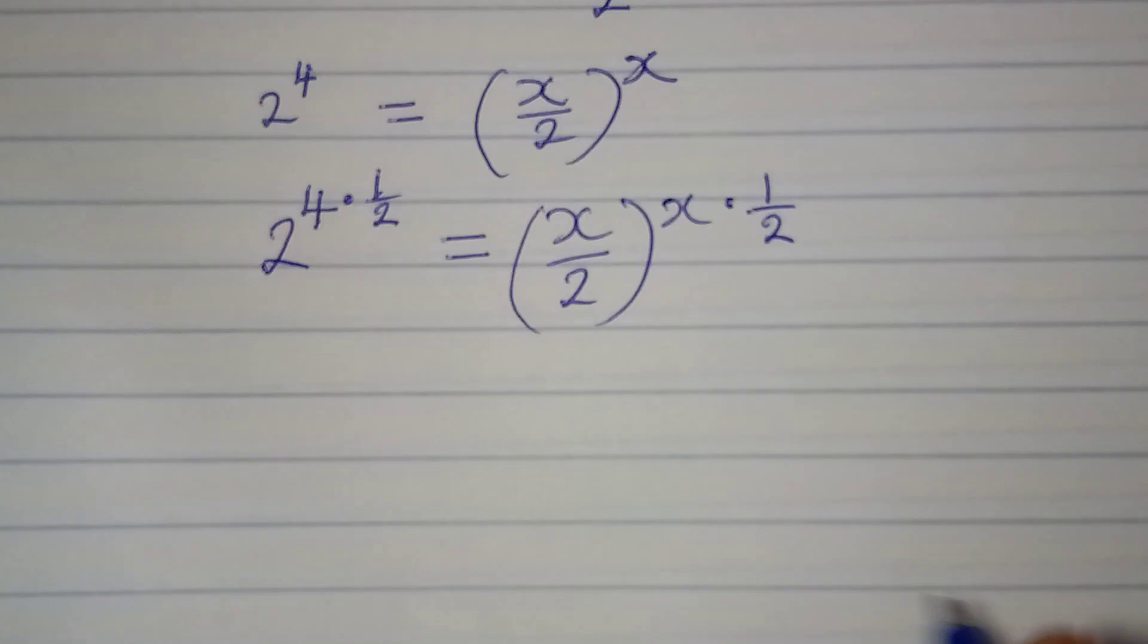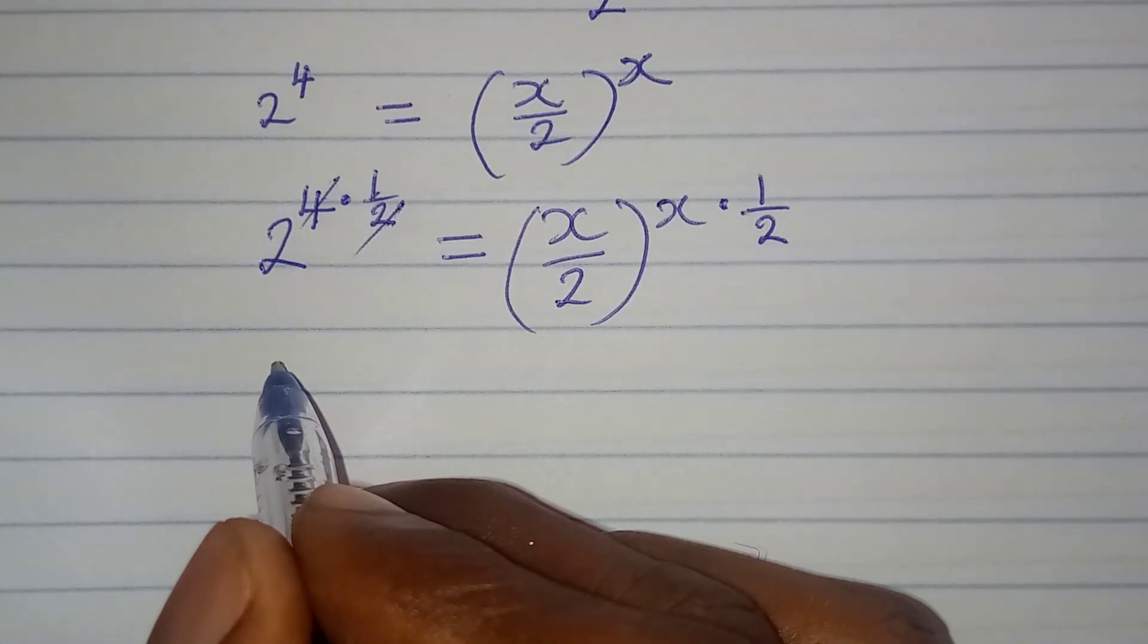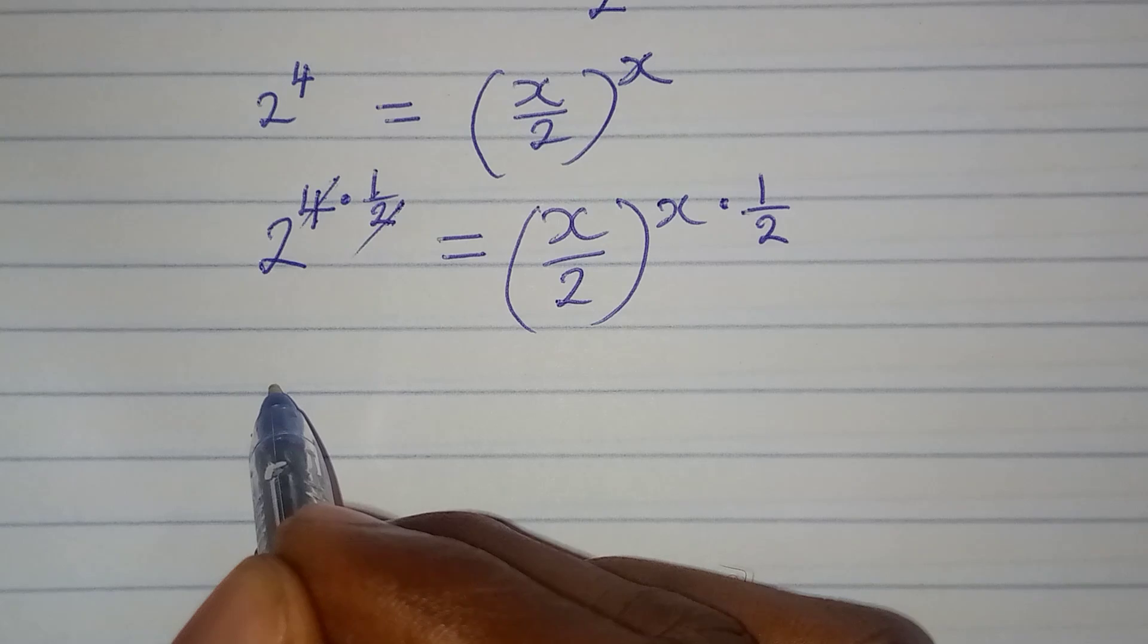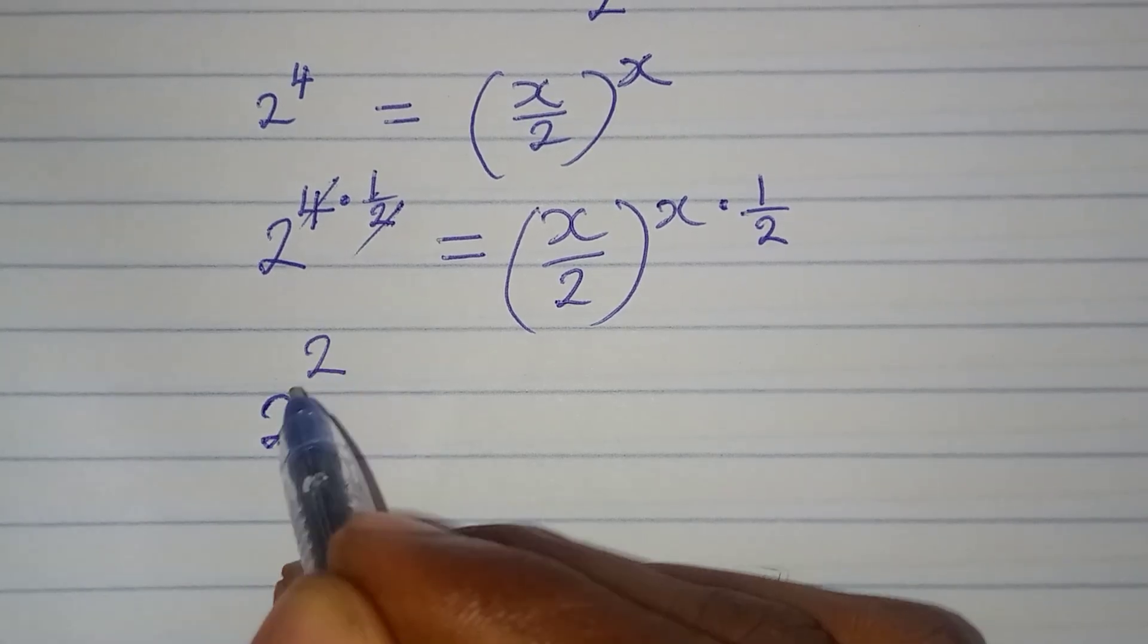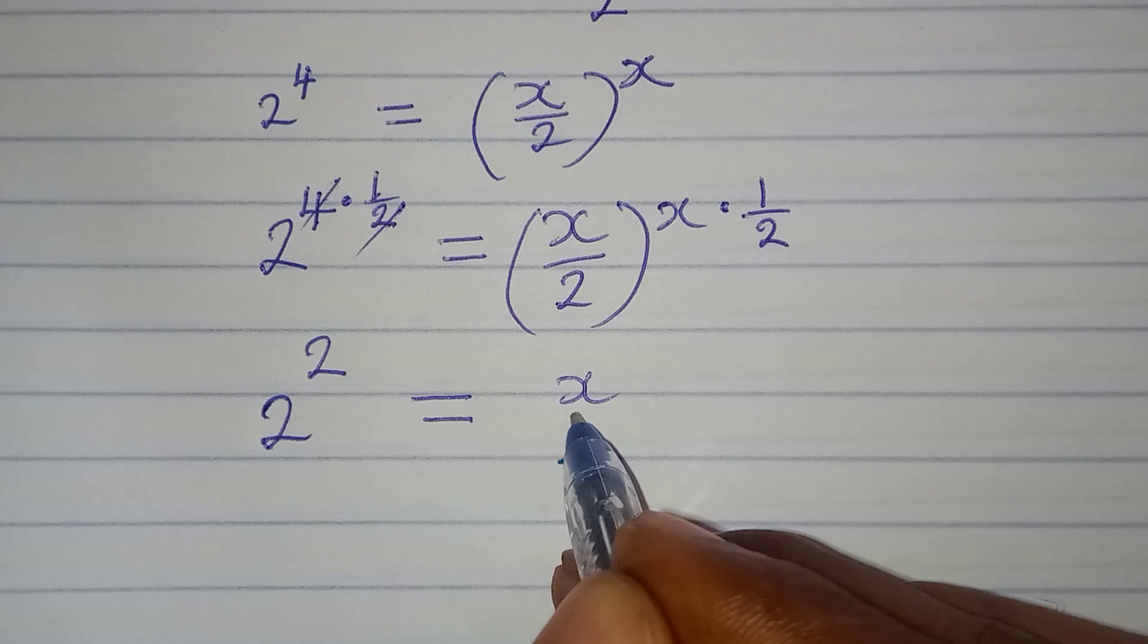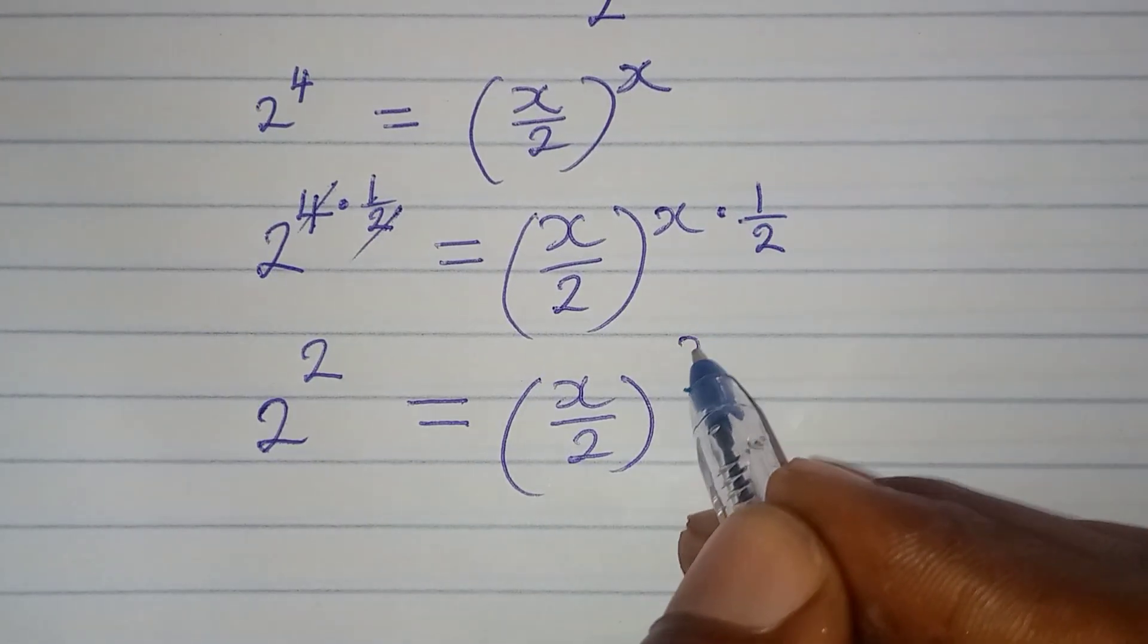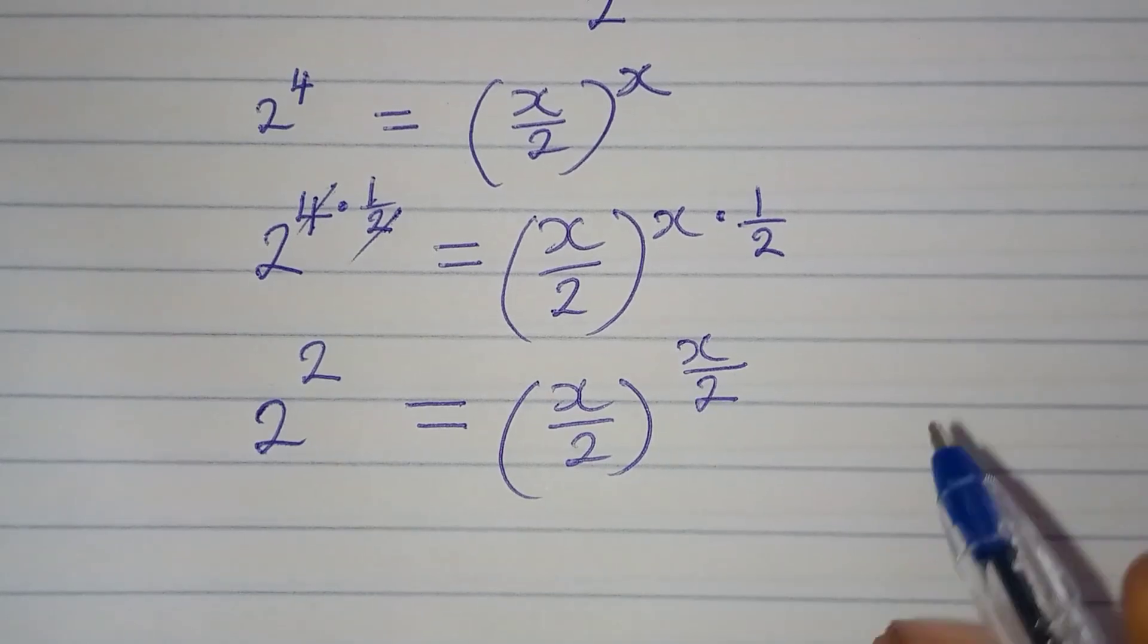And then from here, 2 can always go into that, so it will give us 2. So I have 2 to the power of 2, and this will be equal to x over 2 to the power of x times 1 is x, and this is over 2.